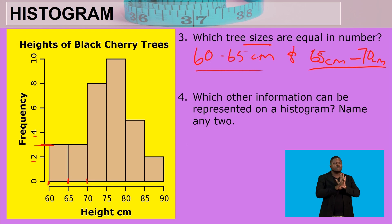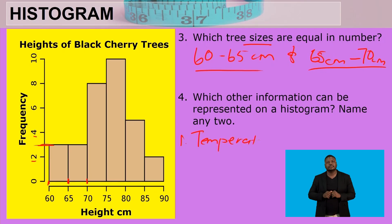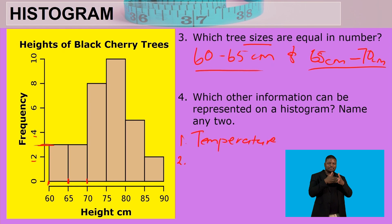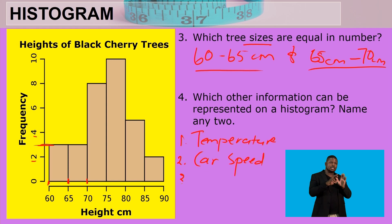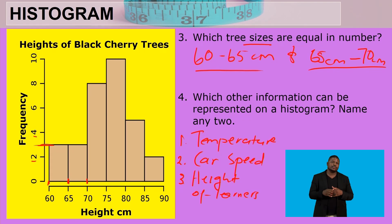Question four asks: which other information can be represented on a histogram? Name any two. A histogram represents continuous data — any data that can be measured. Examples include temperature, the speed of a car, and the height of learners. You only need to mention any two of these.